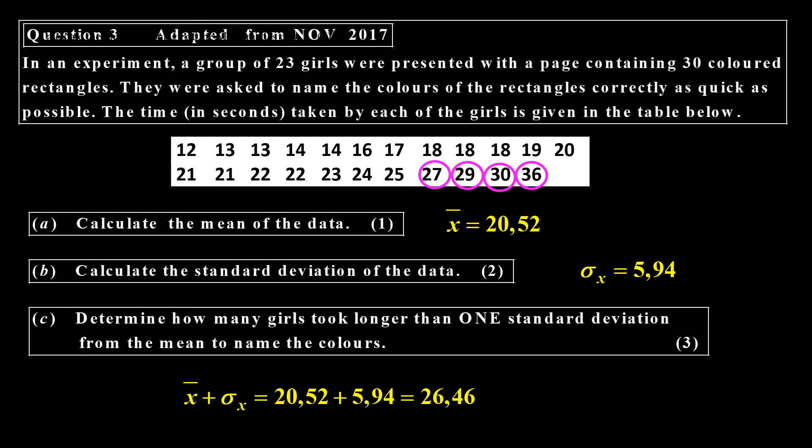And if we now look at the ones that are longer, as you can see the ones above there, more than 26.46 is 27, 29, 30, and 36. And that tells us that there will be four girls that took longer than one standard deviation.